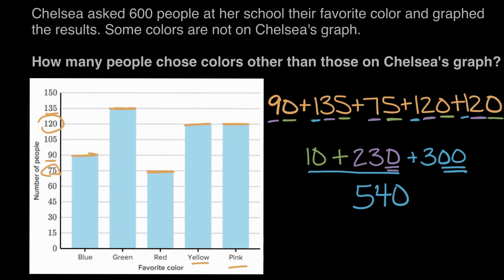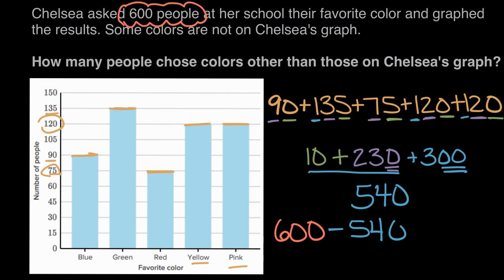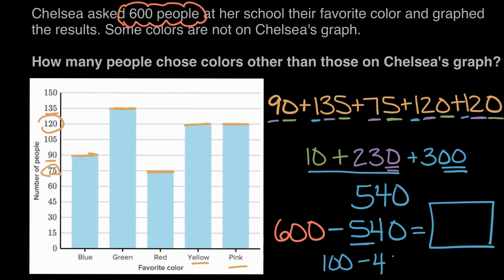But we're asked how many are not on the graph. There were 600 total people asked, and we want to take away the 540 who were on the graph. Starting by subtracting 500: 600 minus 500 is 100. Then subtracting the remaining 40: 100 is ten tens, minus four tens is six tens, or 60. So there were 60 people who chose colors other than those on Chelsea's graph.